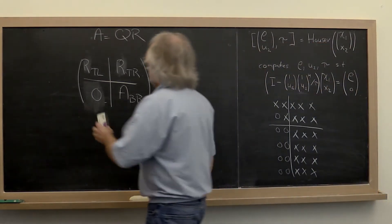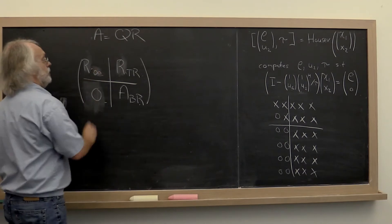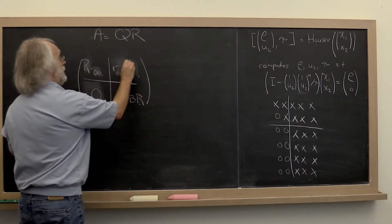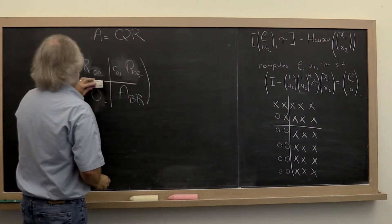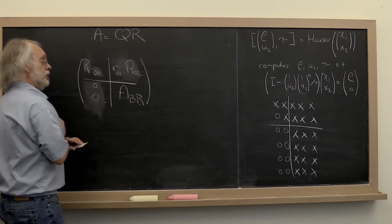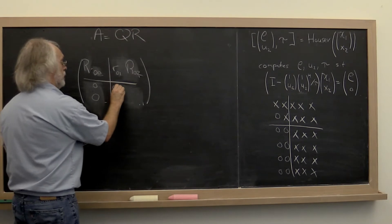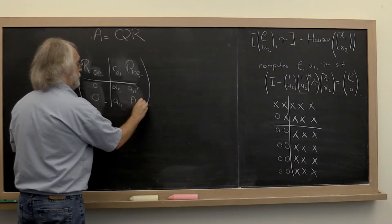So in order to facilitate that, let's relabel this R00. Let's split off the first column here. And then we have the rest of the columns. This here becomes a row of zeros with a block of zeros below it. And this submatrix becomes alpha11, a21, a12 transpose, a22.